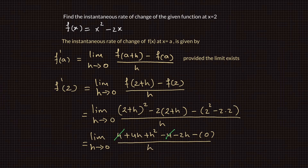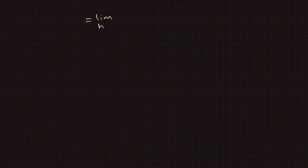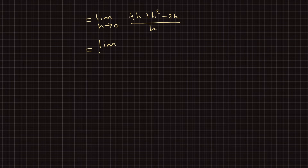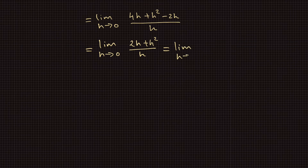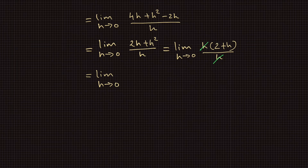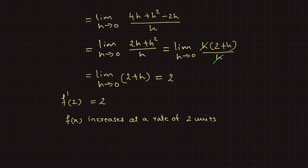Canceling out negative 4 and 4 and simplifying, we obtain the limit as h goes to 0 of 4h plus h squared minus 2h divided by h. Taking h as a common factor, we can write this as the limit as h goes to 0 of h times 2 plus h divided by h. Canceling out the common factor h, this gives the limit as h goes to 0 of 2 plus h, which equals 2.